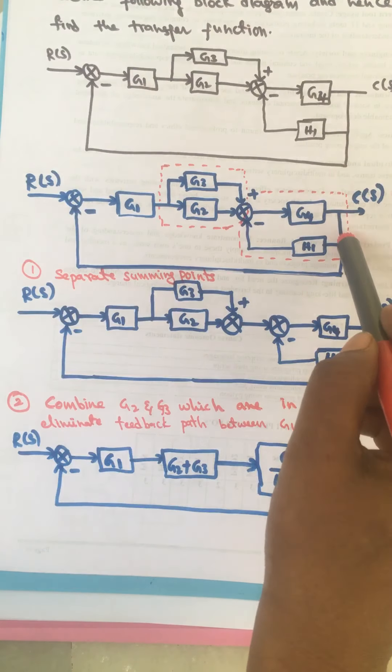If we take the LCM on the denominator, the term 1 plus G4·H1 cancels. In the numerator we get G1·(G2 plus G3)·G4 divided by 1 plus G4·H1, plus G1·(G2 plus G3)·G4. The transfer function, C(s) over R(s), is equal to G1·(G2 plus G3)·G4 divided by 1 plus G4·H1 plus G1·(G2 plus G3)·G4.